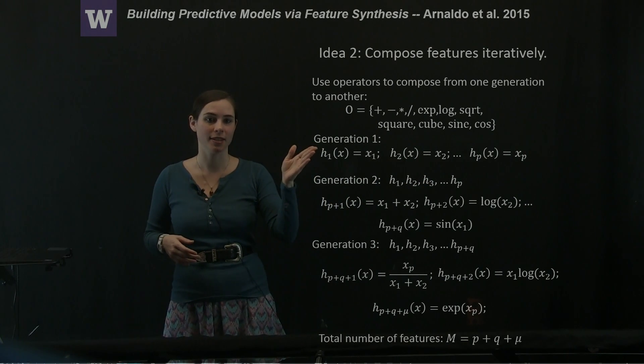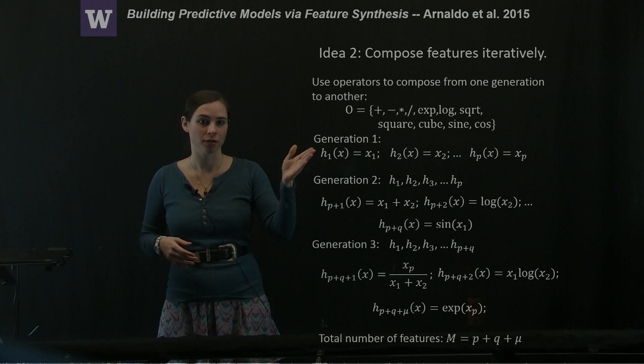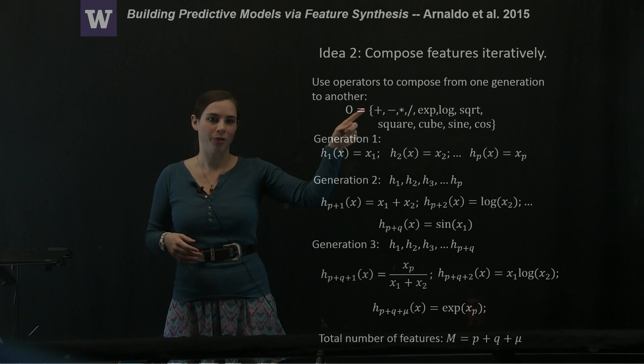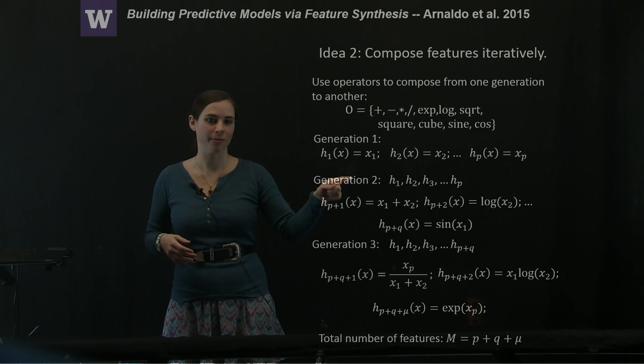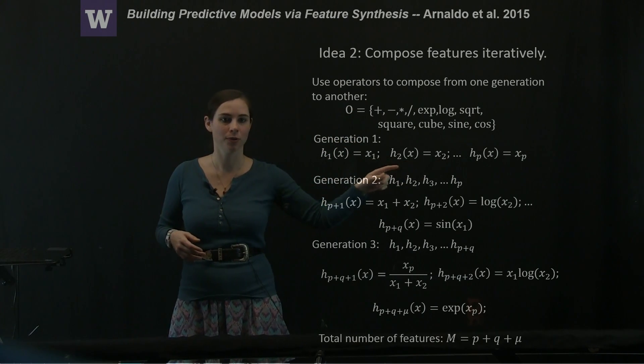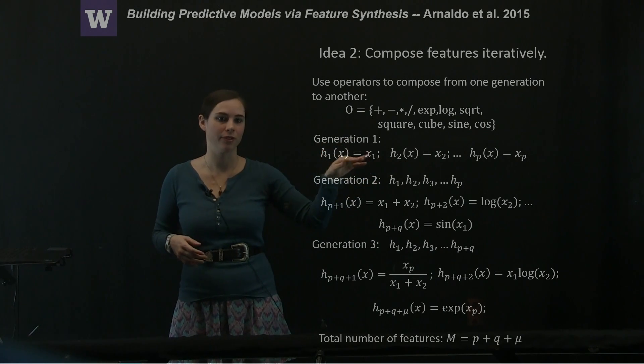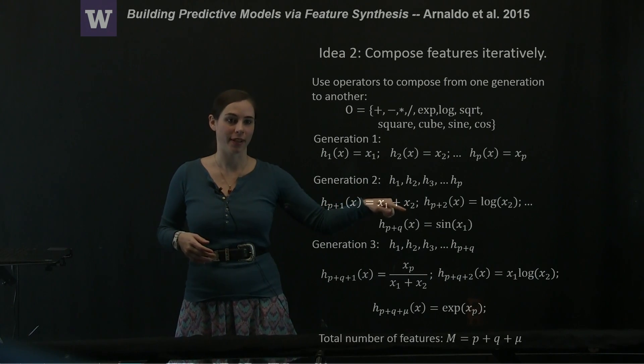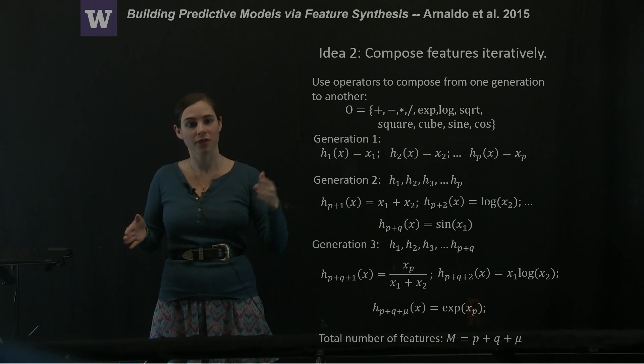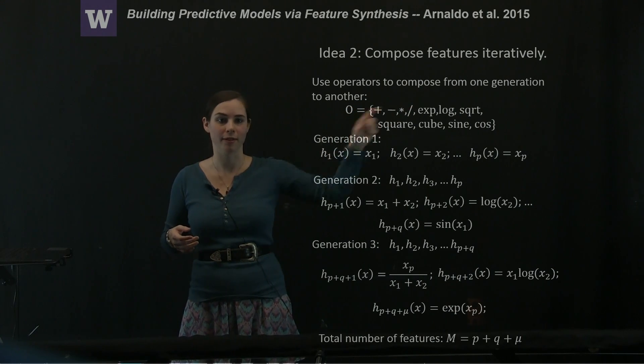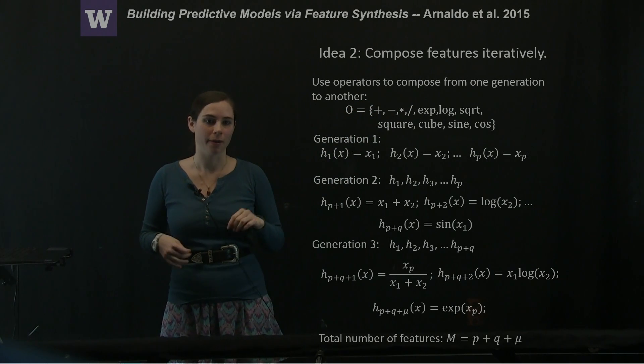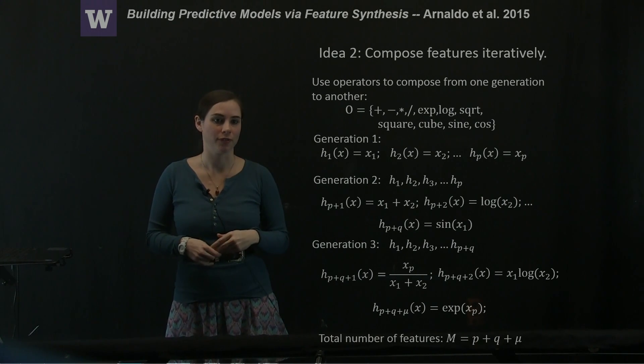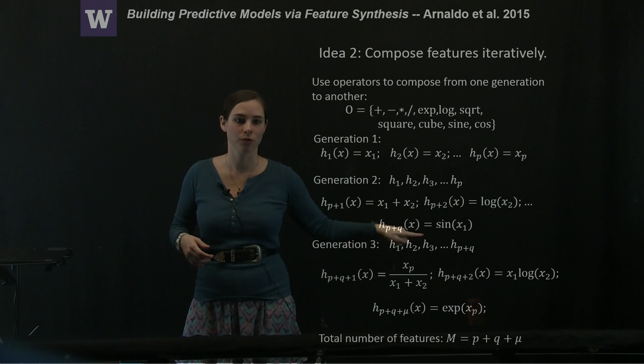Generation two then takes these generation one features and composes them together using operators from the operator pool. For example, they would take the plus operator and randomly select x1 and x2, the h1 and h2 features from that previous generation, to create a new generation of features, x1 plus x2. It could be that it requires two features like the plus, minus, multiply, divide type operators, or it could be that it only requires one previous generation feature, like log x2 or sin x1.